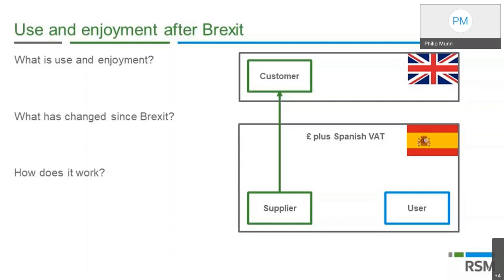The use and enjoyment rules stipulate that particular services in particular member states will be subject to local VAT if those services are used and enjoyed in that member state. Not all member states have opted to use these rules. The UK has use and enjoyment rules, and about 11 EU member states have them as well — Spain being one of those countries. The rules are there to ensure that if services are used in the EU they are subject to EU VAT. However, they only kick in where the recipient customer is outside of the EU and would otherwise be outside the scope of EU VAT.